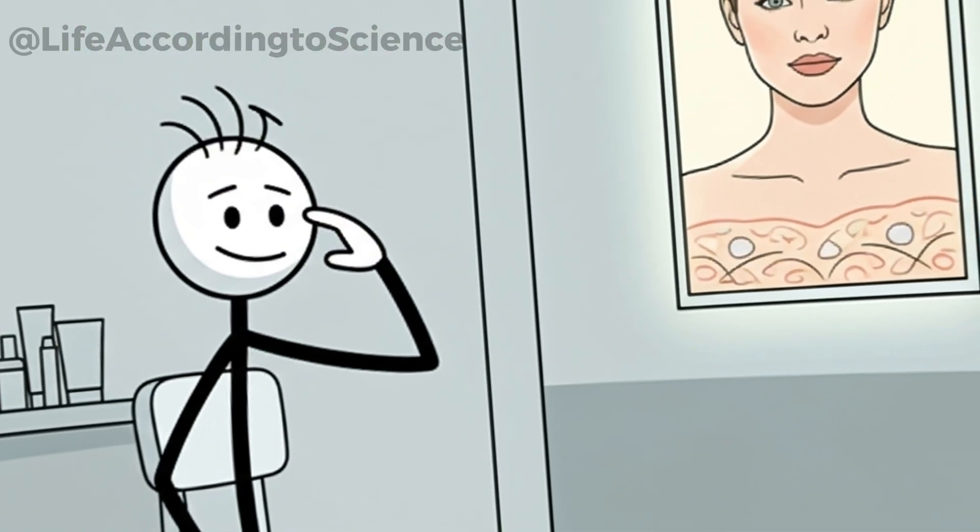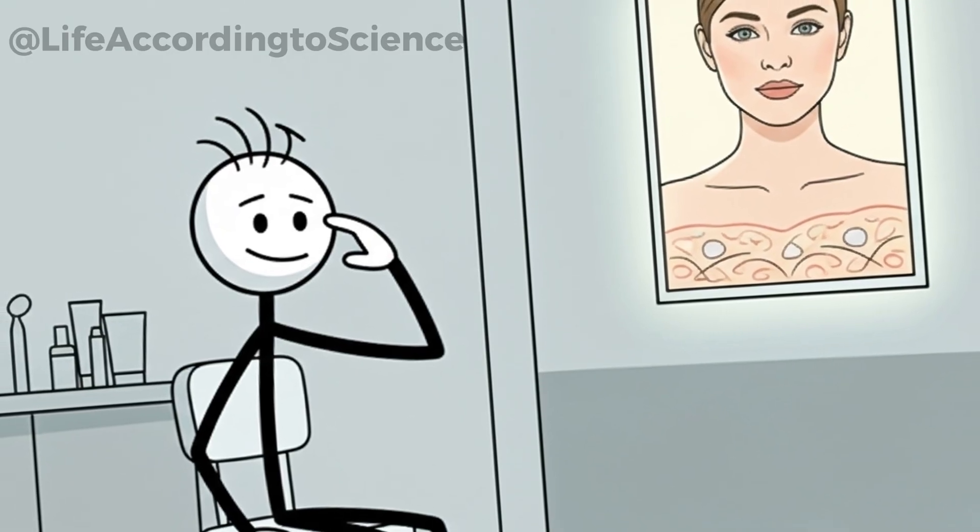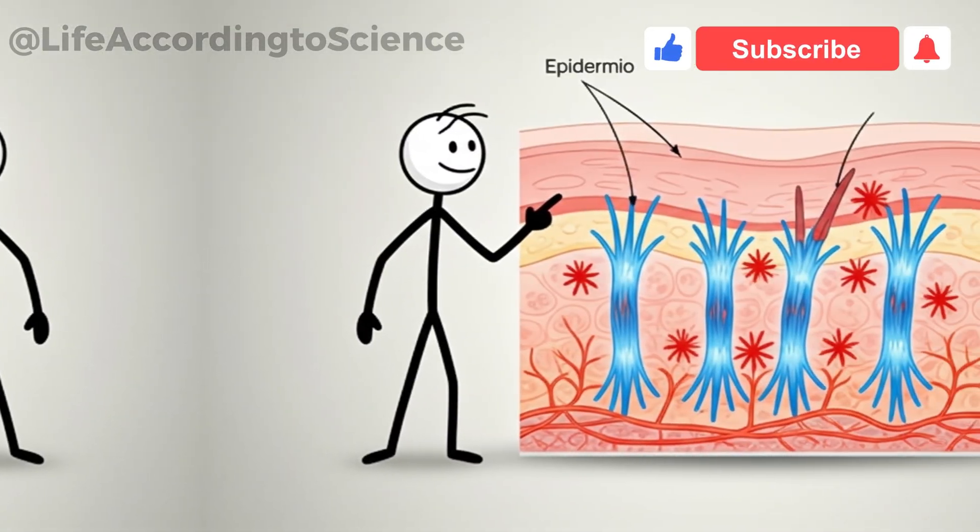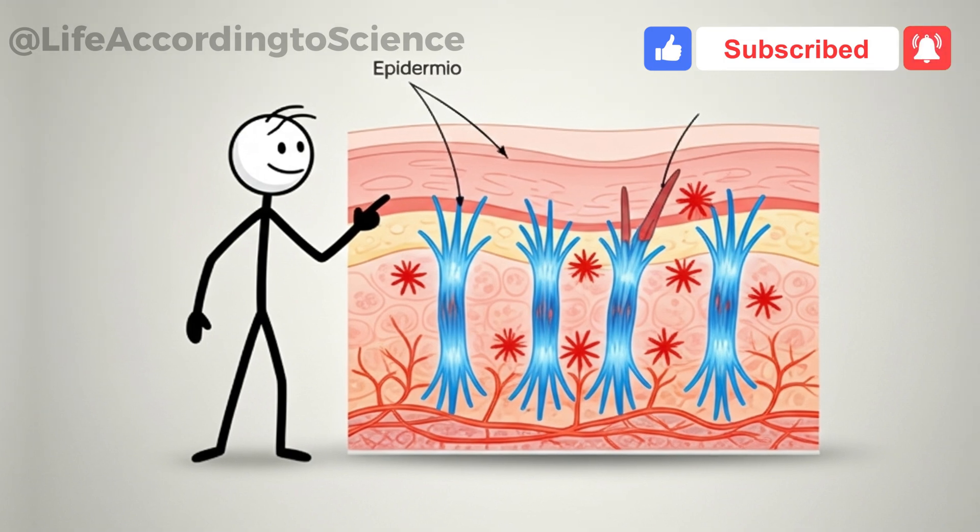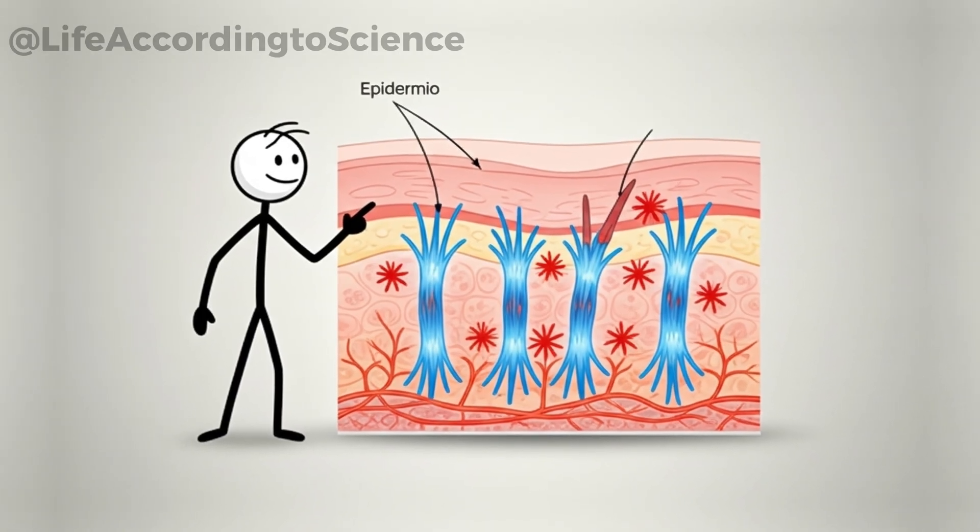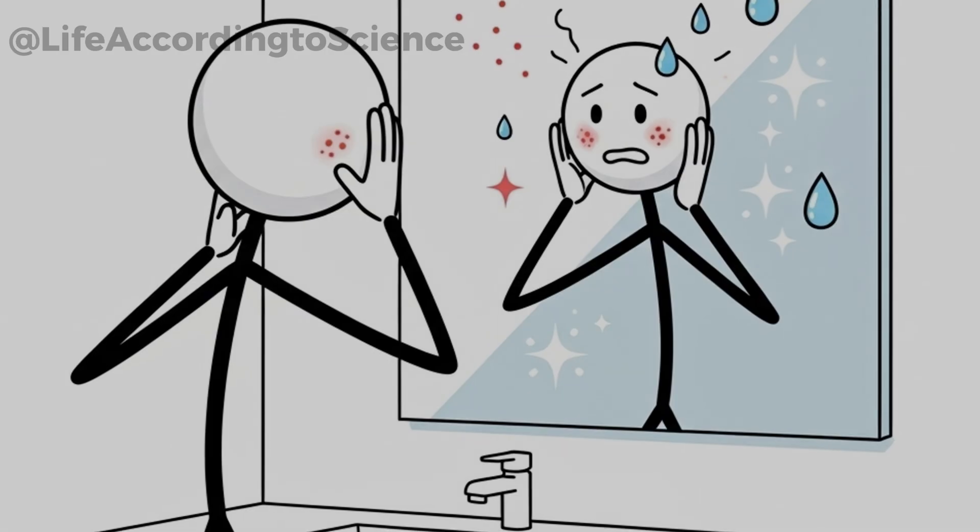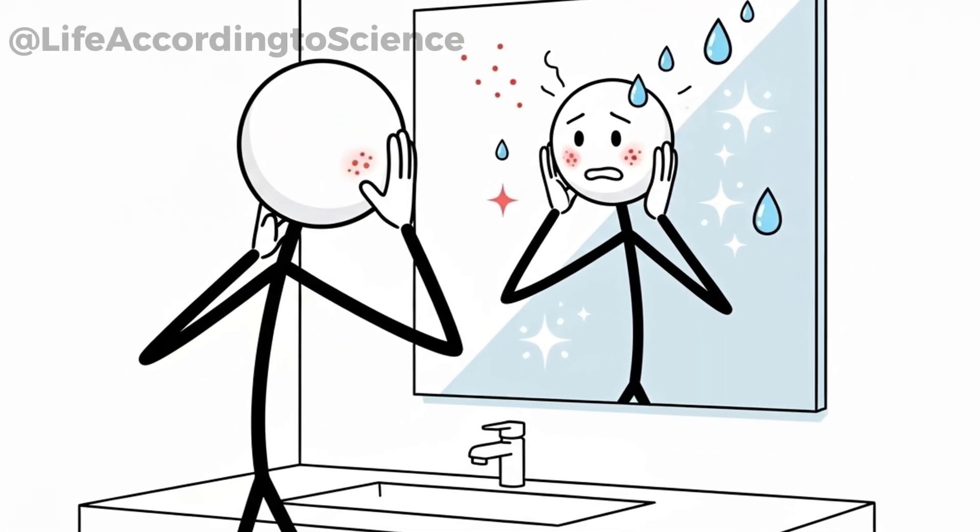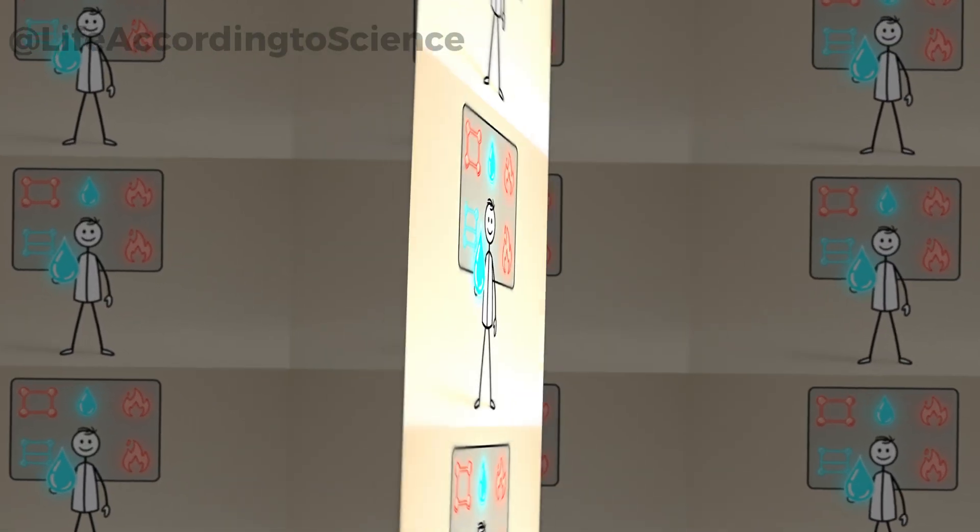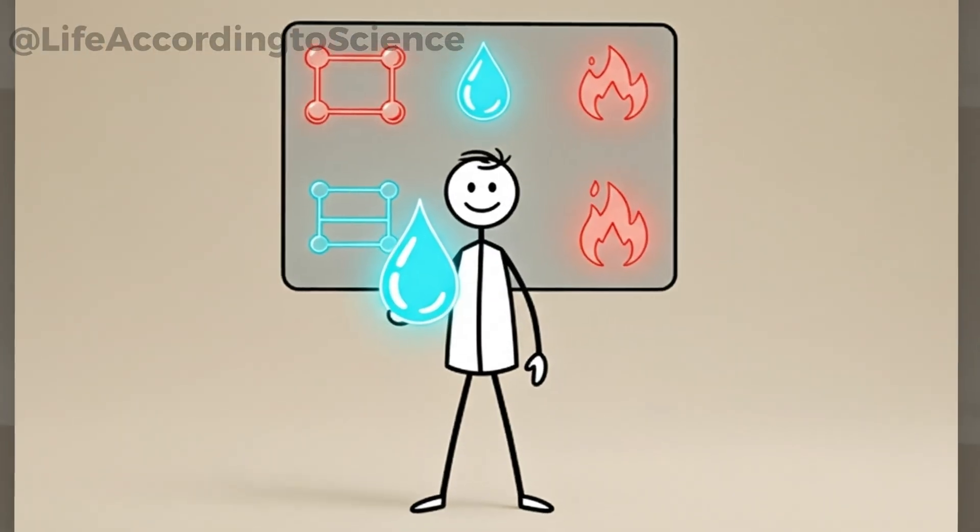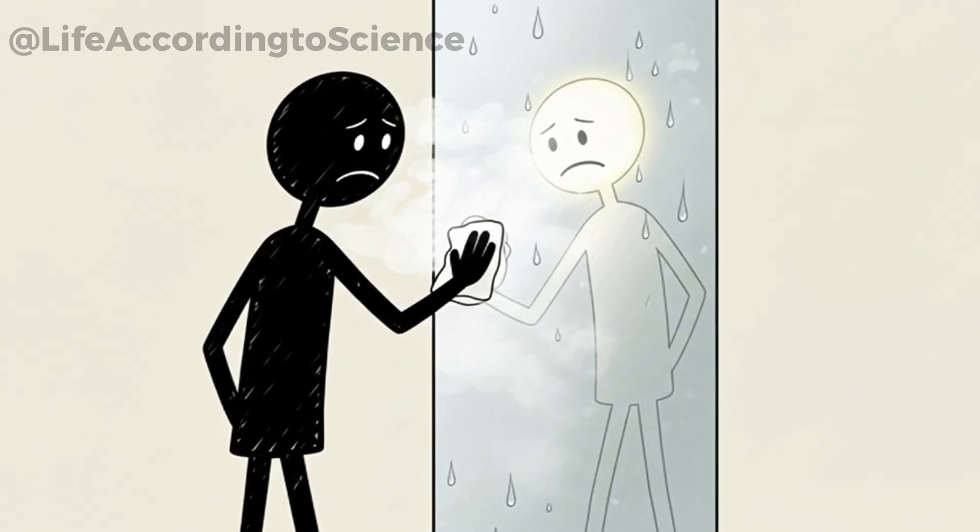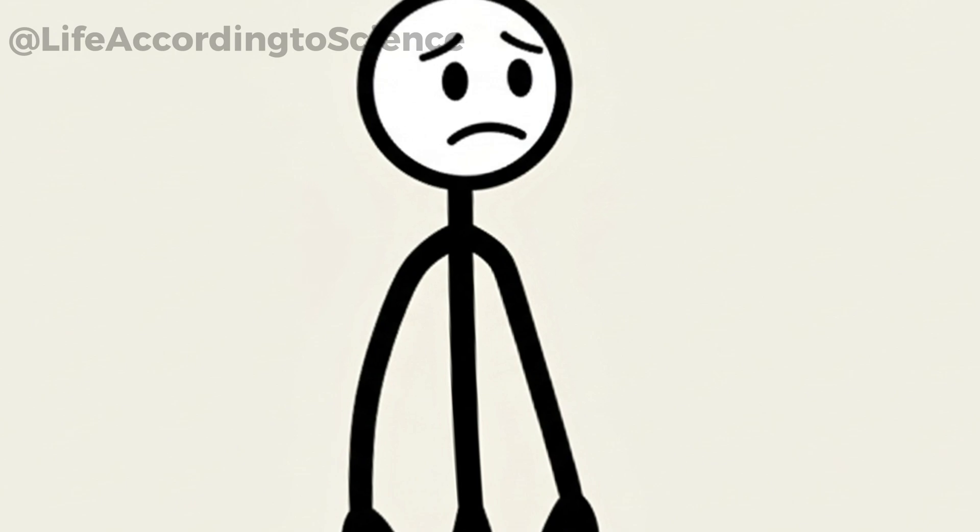Cutting sugar doesn't just transform your insides, it shows on the outside, too. Dermatologists often call sugar one of the biggest enemies of healthy skin. Why? Because sugar fuels inflammation and weakens collagen, the protein that keeps your skin firm and youthful. After just a week or two without sugar, people often notice their skin looking clearer, less oily, and even more radiant. Acne breakouts may calm down, and puffiness starts to fade. This happens because reducing sugar lowers inflammation, balances hormones, and improves hydration. Your skin cells suddenly have a chance to repair instead of fighting constant damage. Think of it like wiping the fog off a mirror. The real glow underneath finally shines through.